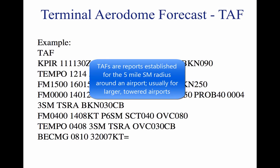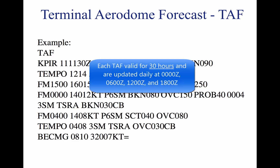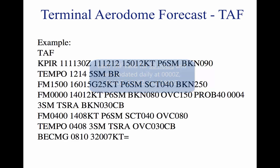A TAF is a report established for the five-statute-mile radius around an airport. TAF reports are usually given for larger airports. Each TAF is valid for a 30-hour time period and is updated four times a day at 0000 Zulu, 0600 Zulu, 1200 Zulu, and 1800 Zulu. The TAF utilizes the same descriptors and abbreviations as used in the METAR report.